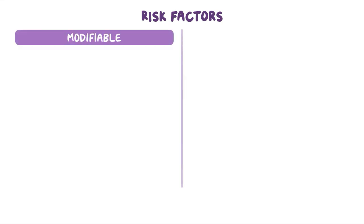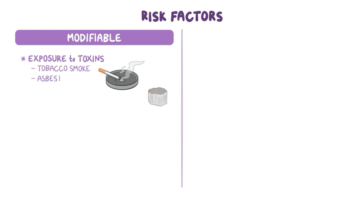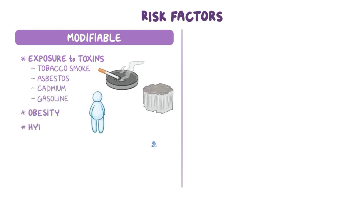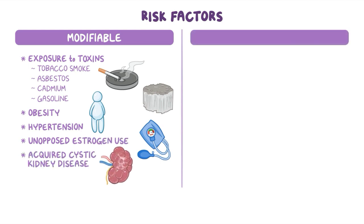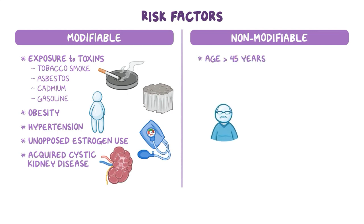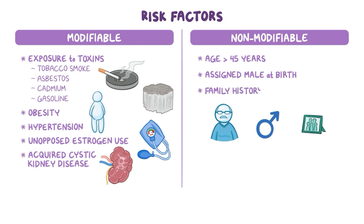The chance of developing renal cancer increases with certain risk factors. Modifiable risk factors include exposure to toxins like tobacco smoke, asbestos, cadmium, and gasoline, as well as obesity, hypertension, unopposed estrogen use, and acquired cystic kidney disease. Non-modifiable risk factors include age above 45 years, being assigned male at birth, and having a family history of renal cancer.